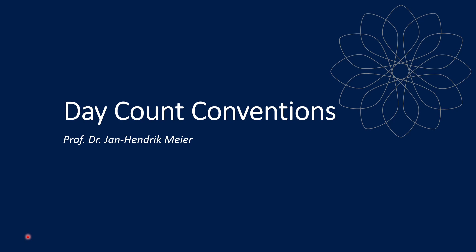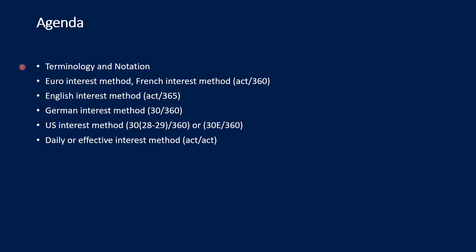Hello and welcome to my video on day count conventions. For this video I planned the following: first, some terminology and notation; then individual day count conventions — the Euro interest method also called French interest method or Actual/360; the English interest method also called Actual/365; the German interest method called 30/360; the US interest method or 30E/360; and last but not least the daily or effective interest method called Actual/Actual.